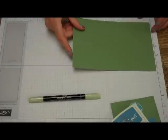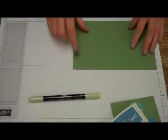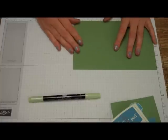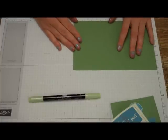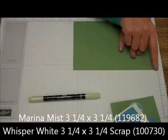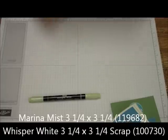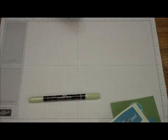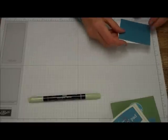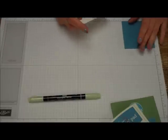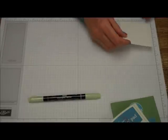For cardstock I'm going to use wild wasabi, eight and a half by five and a half, and we're going to be using some Marina Mist three and a quarter by three and a quarter.